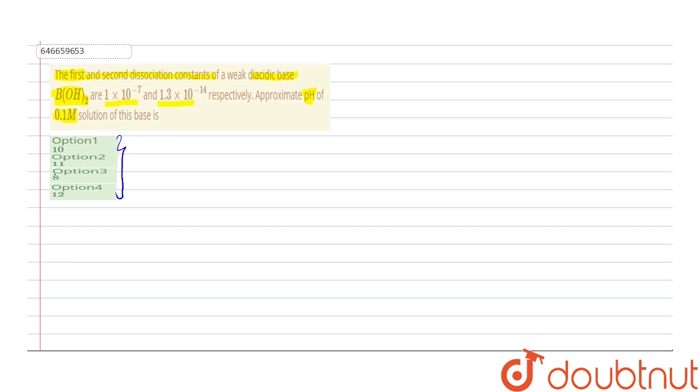First of all, for this dibasic acid, what are the first and second dissociation constants and how are they obtained? The dibasic acid B(OH)₂ dissociates in solution or in water to give